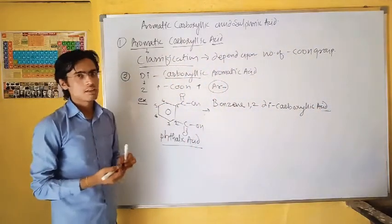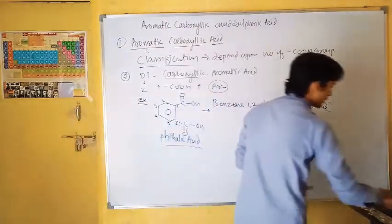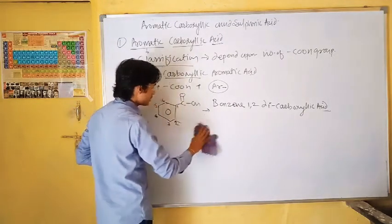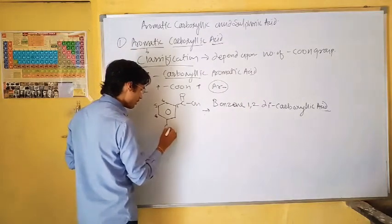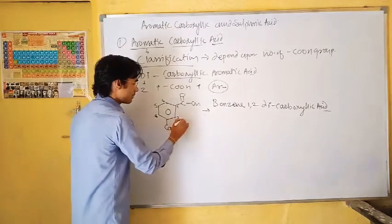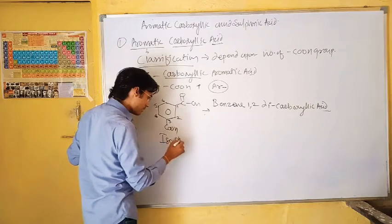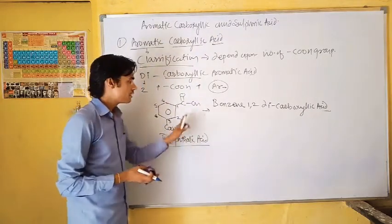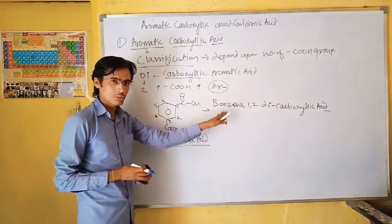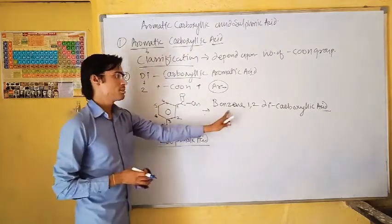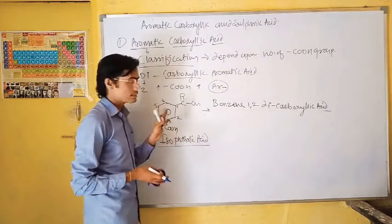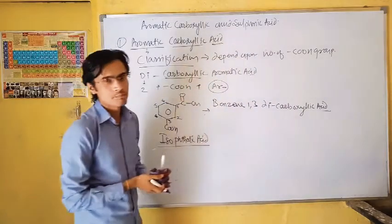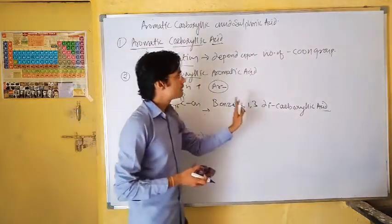If I isomerize this compound — that is a second example of this category. If I replace this -COOH from position 2 to position 3, then this is said to be isophthalic acid. The IUPAC name of isophthalic acid: the aromatic molecule remains benzene, and it is only a position isomer. When positions 1 and 3 are associated with -COOH functional groups, the IUPAC name becomes benzene-1,3-dicarboxylic acid.